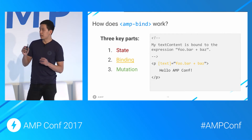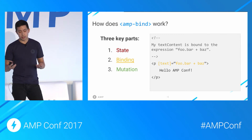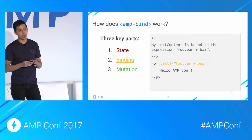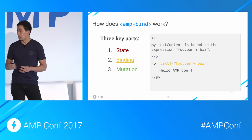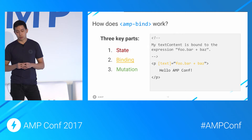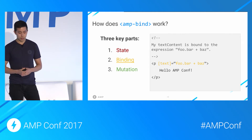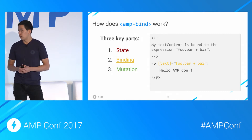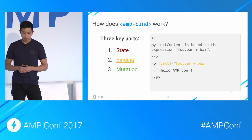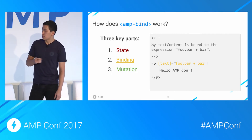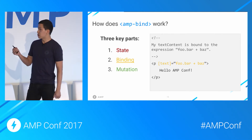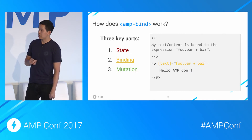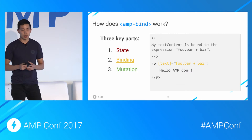The second part is binding, which is where amp-bind gets its name. Binding, or data binding, is basically just a link between an HTML element and an expression, where the element's property in square brackets is bound to or updated with the result of the expression. Expressions in amp-bind can also refer to the state. In this example, we have a paragraph element whose text content — or text for short, again in square brackets — is bound to the expression foo.bar plus baz. foo was the ID of the amp-state element on the previous slide.